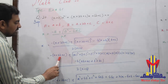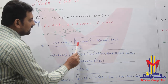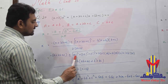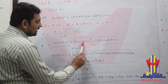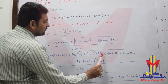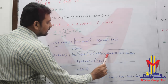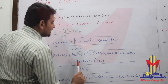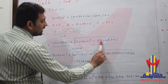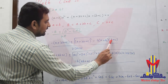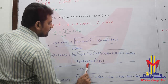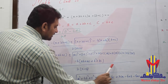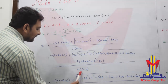Now we expand (A+2B+C)². As we did in question 19, the whole square formula gives: A² + (2B)² + C² + 2·A·2B + 2·2B·C + 2CA = A² + 4B² + C² + 4AB + 4BC + 2CA. Then we expand -4(A+B)(B+C) = -4(AB + AC + B² + BC).